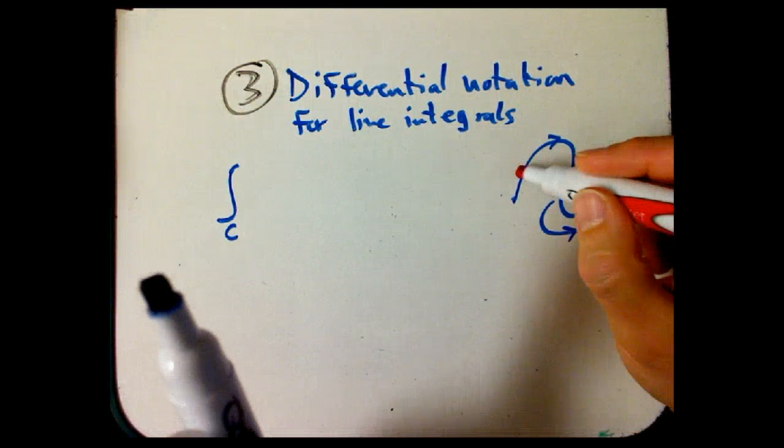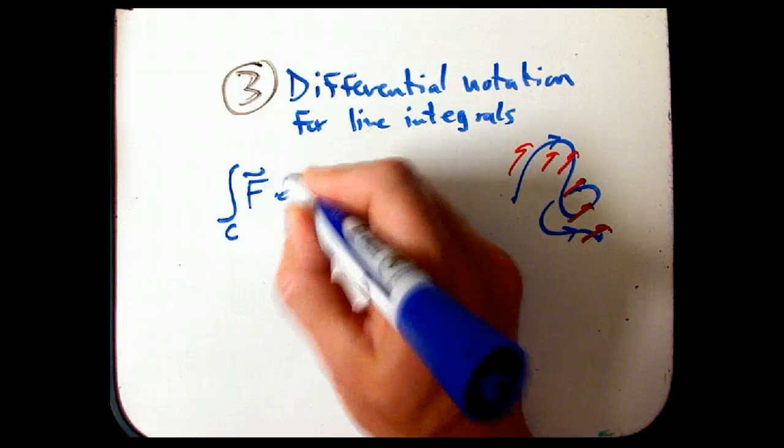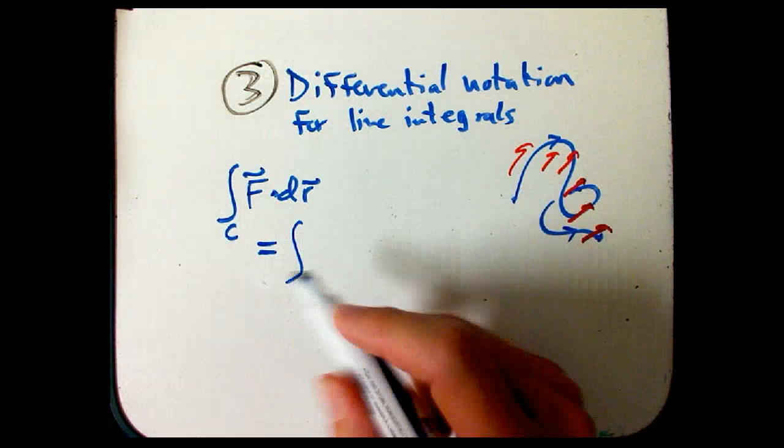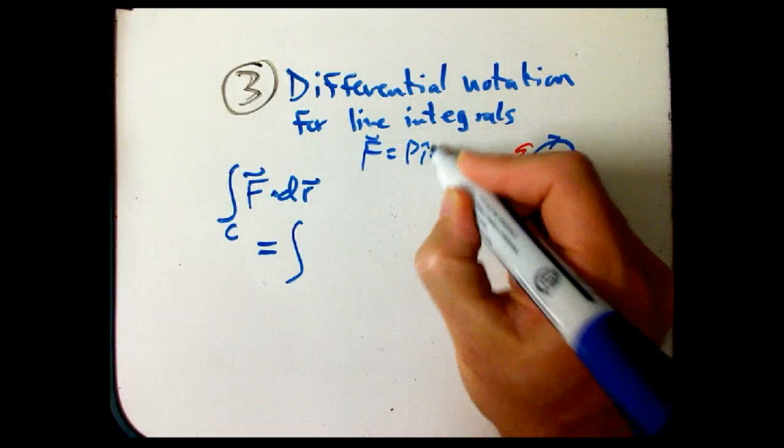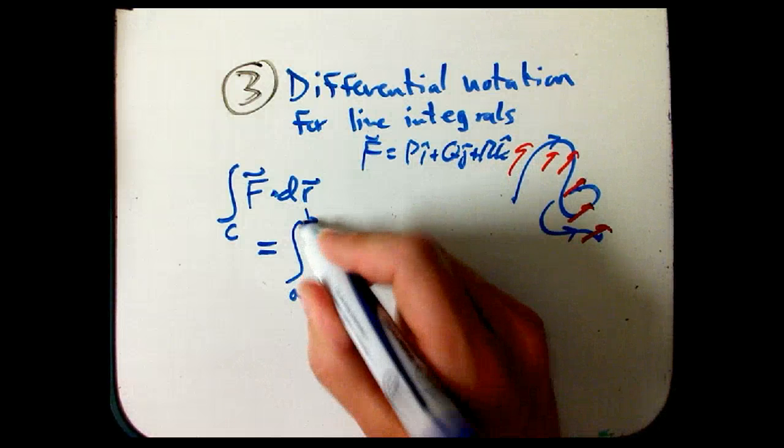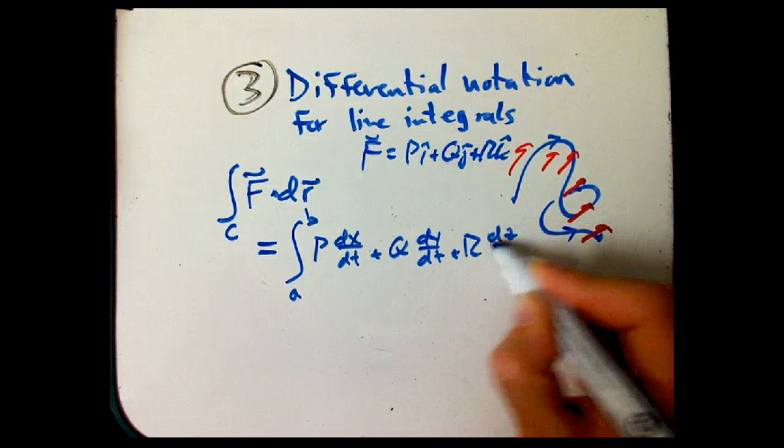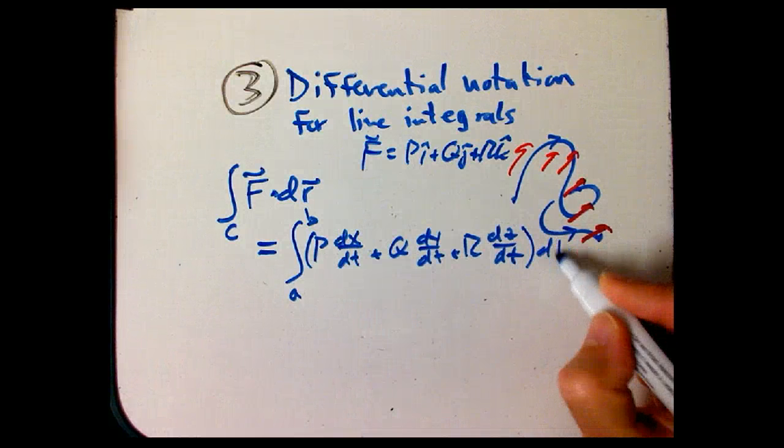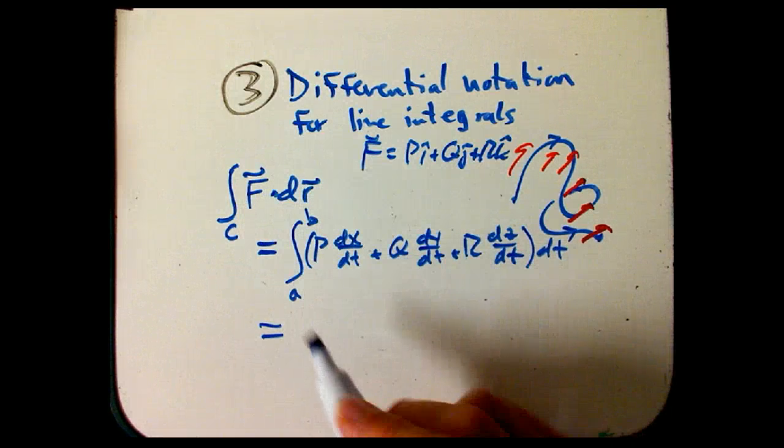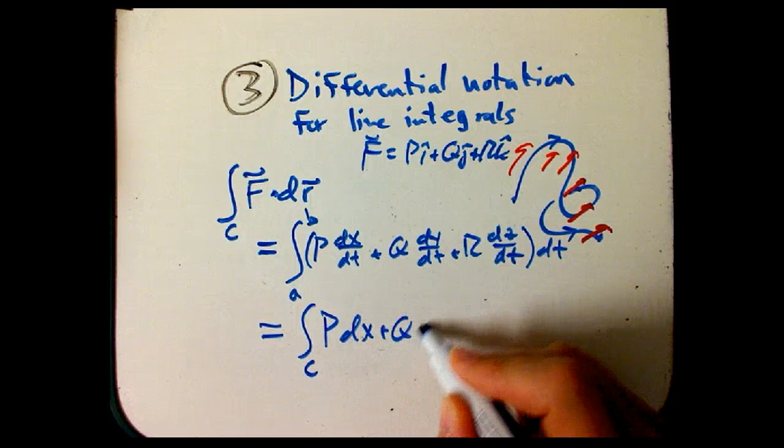And then I have a vector field that I want to integrate along that curve. I like the geometric way to write it, F dot dR, because it's very visual. But I observe in another video that when you actually calculate that, let's say F is Pi plus Qj plus Rk, you actually get down to parametrizing it from A to B: P dx/dt plus Q dy/dt plus R dz/dt, all times dt.